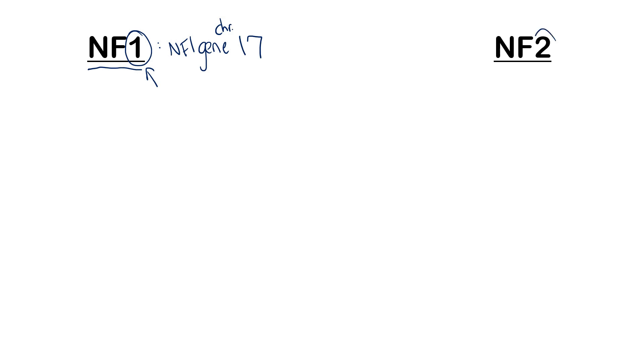NF2, this one's even easier. It's the number 2, so let's use the number 2 two times. This is the NF2 gene on chromosome 22. We just took the number 2 and used it twice. That takes care of the important genetics they could ask you about.